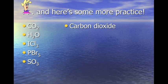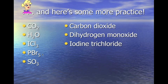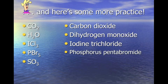Dihydrogen monoxide: two hydrogens gives di-, one oxygen gives mono- plus -ide, so dihydrogen monoxide. Iodine trichloride: one iodine is just iodine, three chlorines gives tri- plus chloride — iodine trichloride. Phosphorus pentabromide: one phosphorus stays as phosphorus, five bromines gives penta- plus bromide — phosphorus pentabromide. Sulfur trioxide: one sulfur, three oxygens — sulfur trioxide.